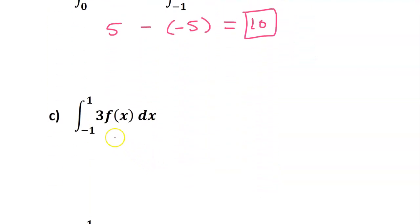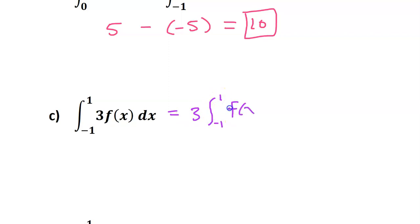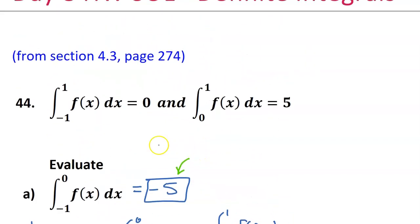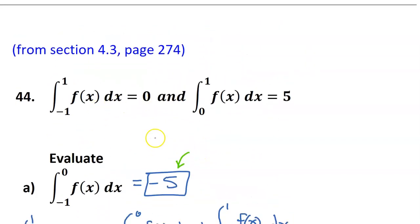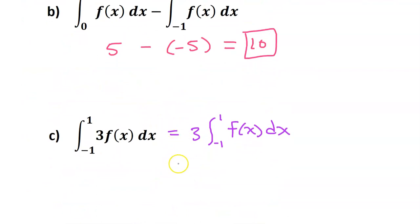For part C, I see a constant of 3 on the inside. We can take that constant and put it in the front. So we have 3 times the integral of f of x from negative 1 to positive 1. We are told that integral is 0, so we really have 3 times 0, which is 0.